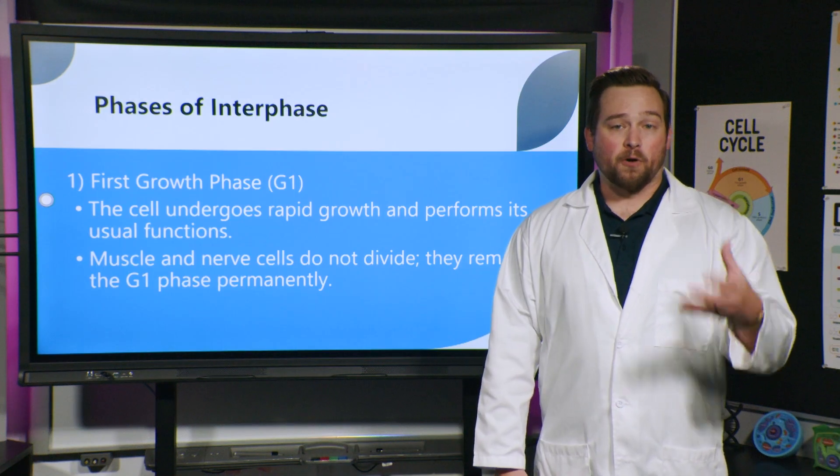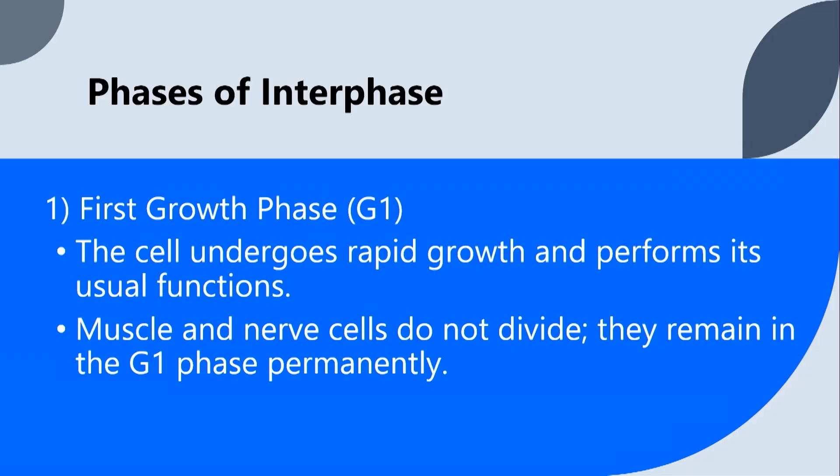So the first part of interphase, like I said, is known as the first growth phase, G1. Here's what's happening during this part of interphase. During G1, the cell undergoes rapid growth, and it performs its usual functions. Your cells have a lot of jobs to do, especially depending on what type of cell it is. Your muscle cells are constantly contracting and relaxing to move your body around. So really, at this point, it's mostly just performing its everyday functions, as well as getting a little bit larger.